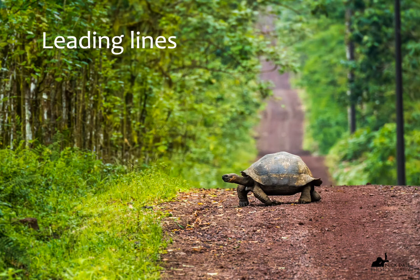When we look at leading lines, they usually tend to be diagonal — coming in from the corners or sides of the image — but they don't have to be. What they need to do is lead the eyes towards the subject, which is what's happening here. The Galapagos giant tortoise is the subject we came to see; the trees we can see anywhere. So the dirt track does its job of guiding our attention to the animal.